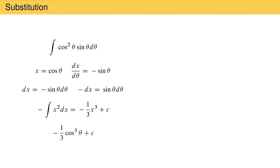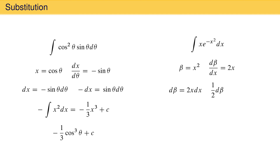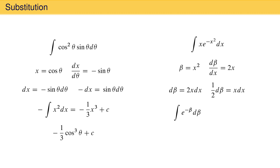Substitution reduces an integral to a simpler form, allowing it to be evaluated from memory or using tables. Another example is the integral of x times e to the minus x squared dx. This indefinite integral is not in any of the tables mentioned, but we can reduce it to a familiar form by defining the variable beta to be equal to x squared. The derivative of beta with respect to x is 2x, so d beta equals 2x dx, giving one-half d beta equal to x dx. Substituting gives one-half times the integral of e to the minus beta d beta, which evaluates to negative one-half e to the minus x squared plus a constant.